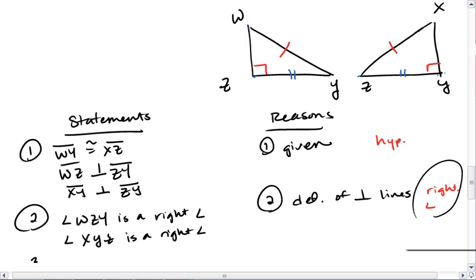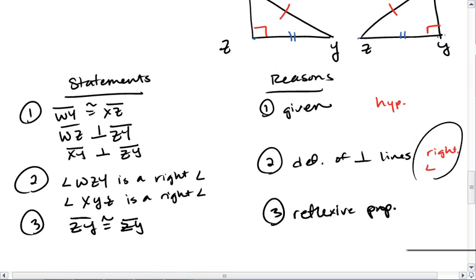Next, I'm going to write ZY is congruent to ZY, and this is our reflexive property.